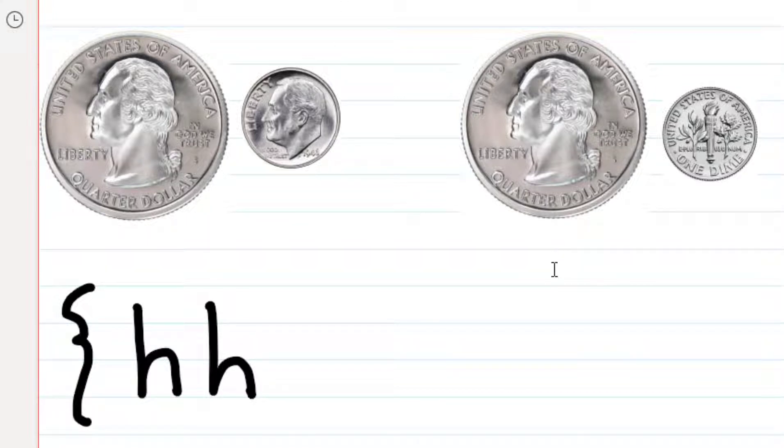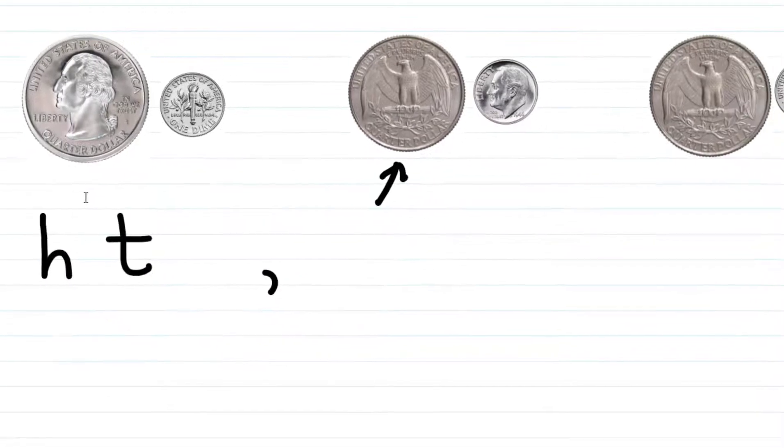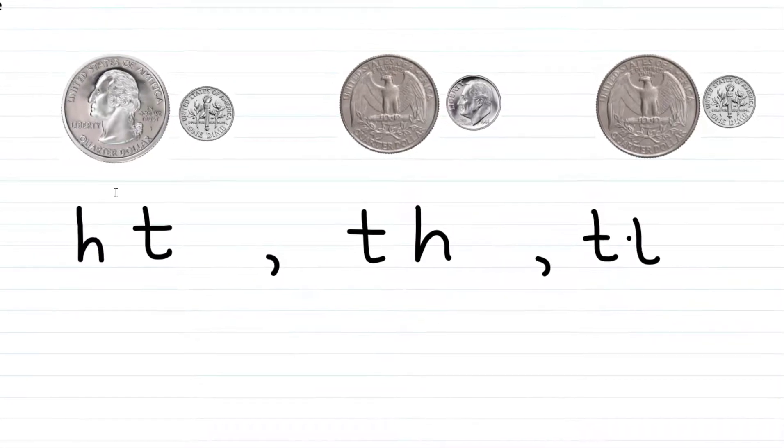Another possibility is that we get heads on the quarter, but the dime turned out to be tails. We can represent that with HT for heads then tails. Another possibility is that we get tails on the quarter and heads on the dime, represented as TH for tails then heads. And finally, they could both be tails, which we can represent as TT.